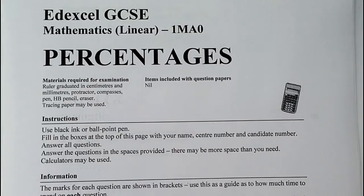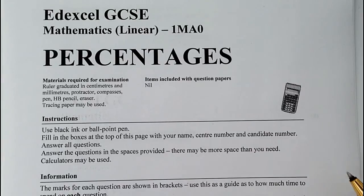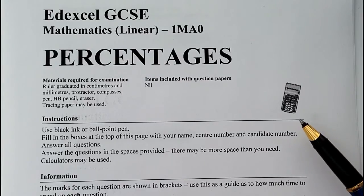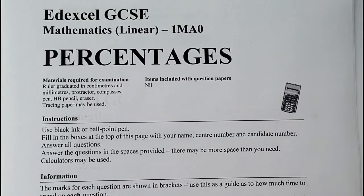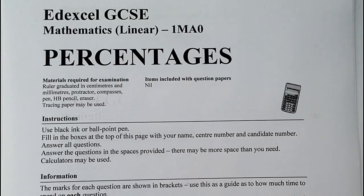Hi, so in this particular paper we're going to be working through a roundabout grade C percentages. Now the first thing is that it is actually a calculator paper and because of that, a lot of the calculations I'm going to be doing are going to be fairly straightforward. What I'll aim to do is just describe a couple of the calculations to you as we're working through it.